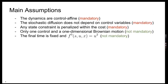Before getting further, let me introduce the main assumptions we're considering from now on. Three assumptions are standard and mandatory. First, we'll be considering control-affine dynamics — the dynamics depend on the control in a linear way, though of course nonlinearity may appear in the state part. Furthermore, the stochastic diffusion — the term in front of the Brownian motion — won't depend on control variables. And additionally, we penalize every state constraint in the cost — that's very important to apply our formalism, as you will see later.